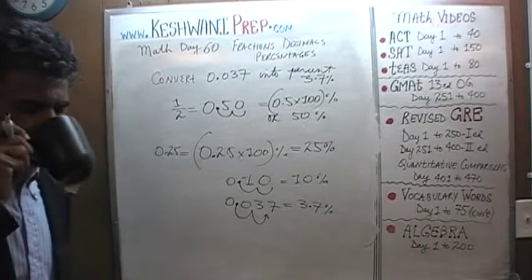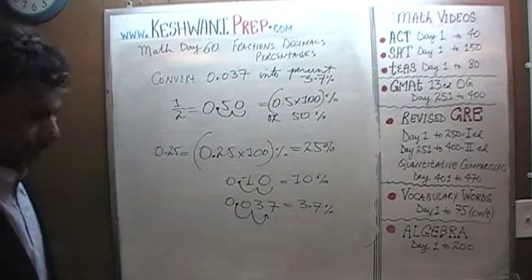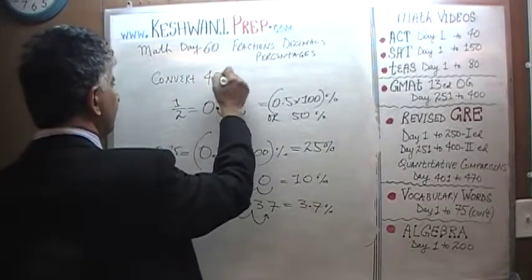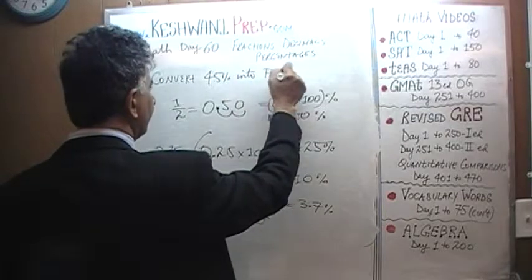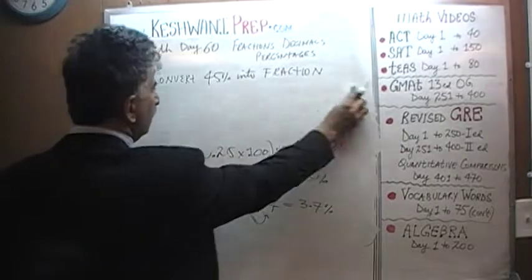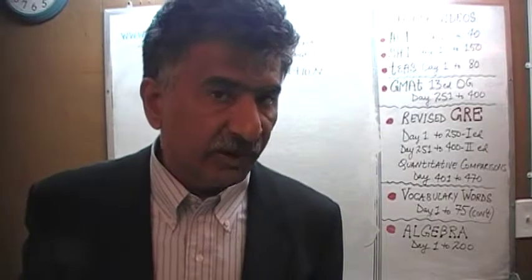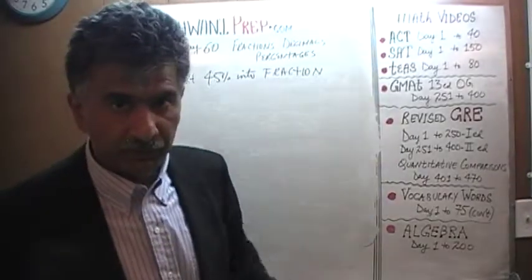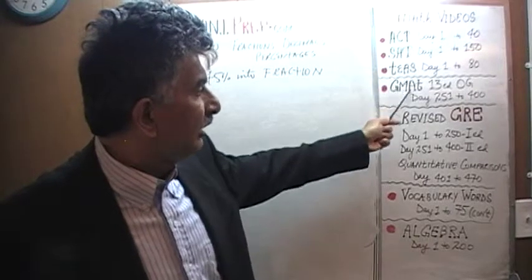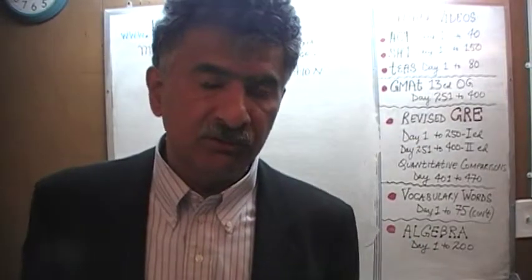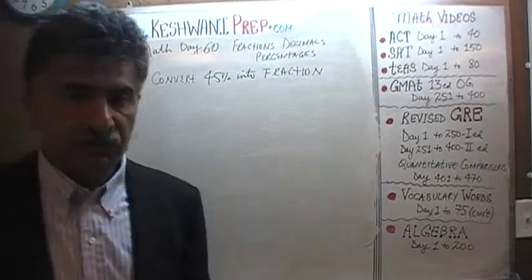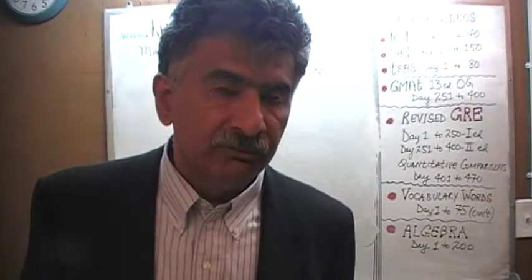Let's do the next one. This one is asking us to convert 45% into a fraction. As we've talked about before, whenever they ask you to convert a percentage into a fraction on a multiple-choice exam — whether ACT, SAT, GMAT, or GRE — the answer choices will be presented in the most reduced fraction form.